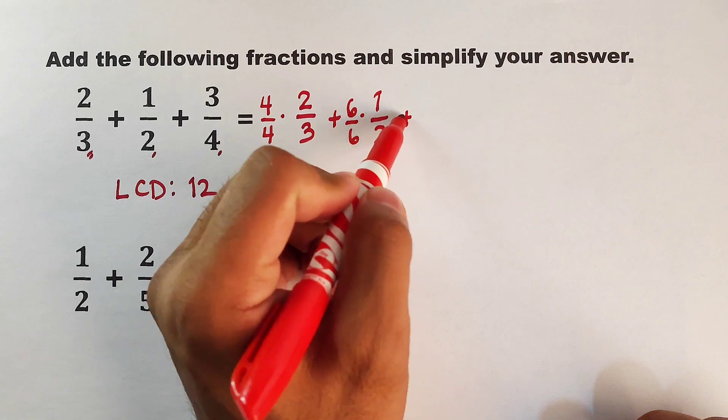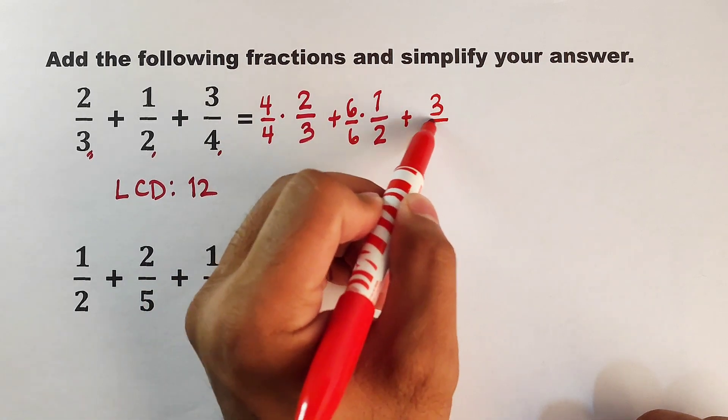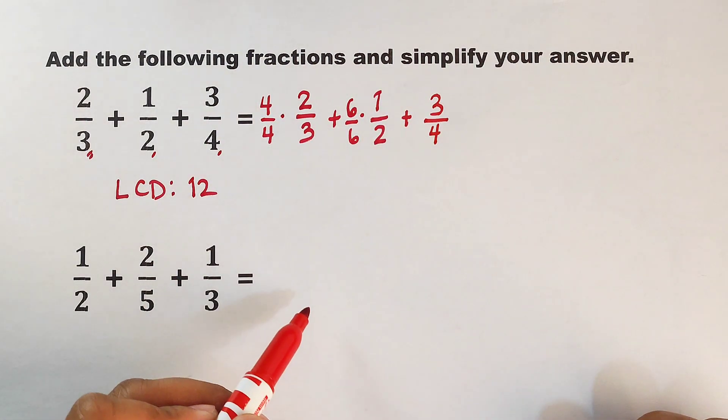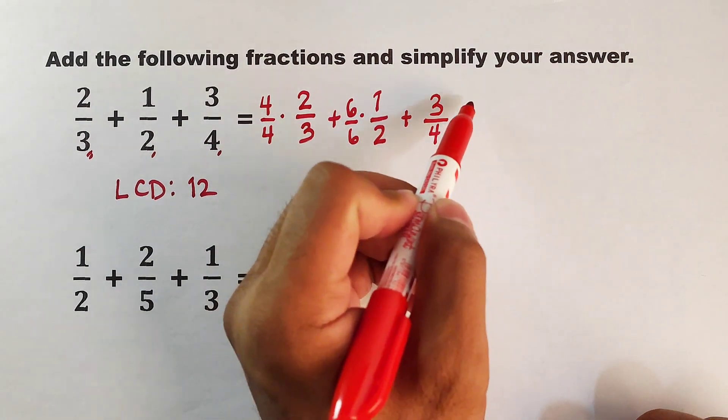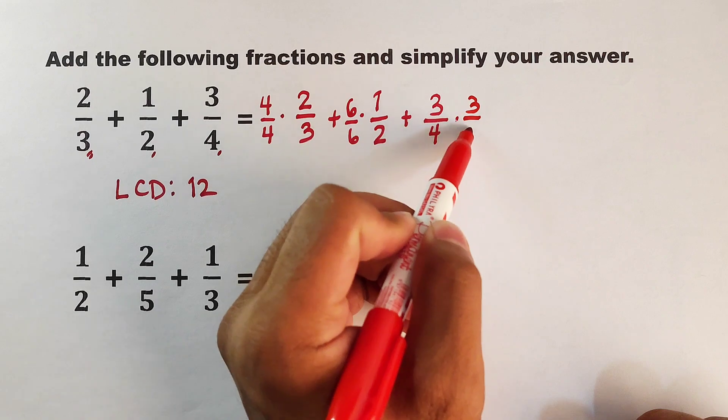Next we have plus 3 over 4. We will multiply 4 by 3, so we will multiply this by 3 over 3.